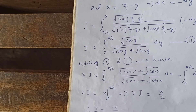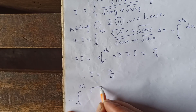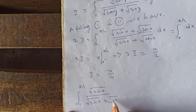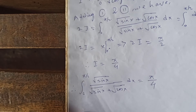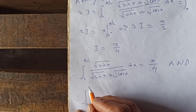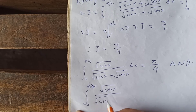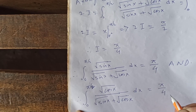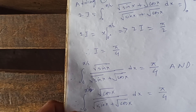Therefore, the integral from 0 to π/2 of √(sin x) over (√(sin x) + √(cos x)) dx equals π/4. Also note that the integral from 0 to π/2 of √(cos x) over (√(sin x) + √(cos x)) dx is also π/4. They are the same. Hence proved.